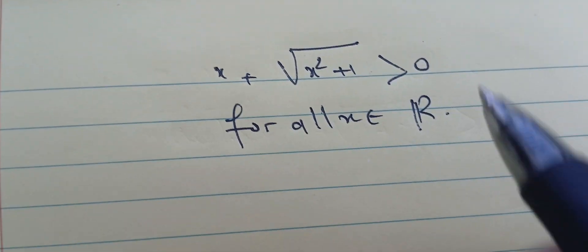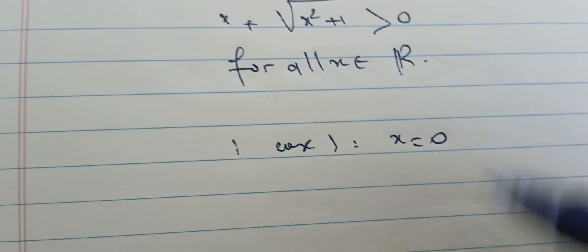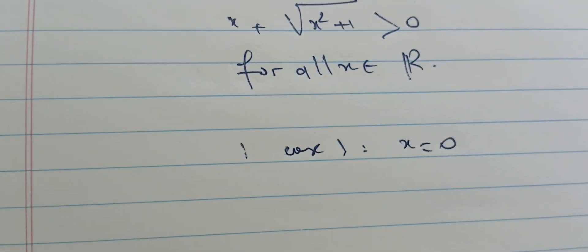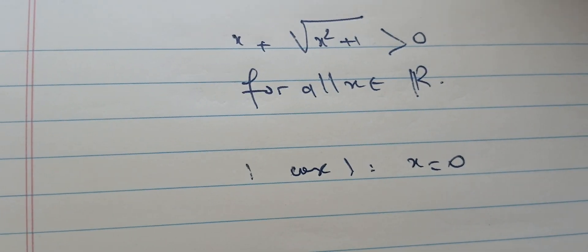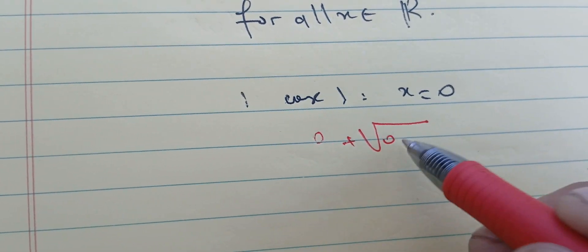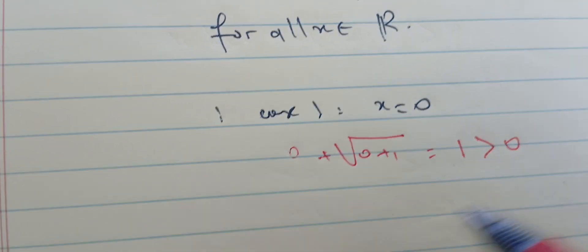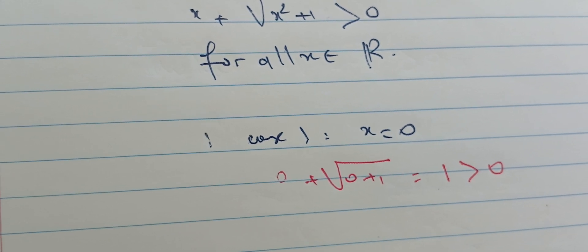Case one: x is zero. When x equals zero, we have zero plus the square root of zero plus one, which is one, and one is strictly bigger than zero. So we are done with the case x equals zero.